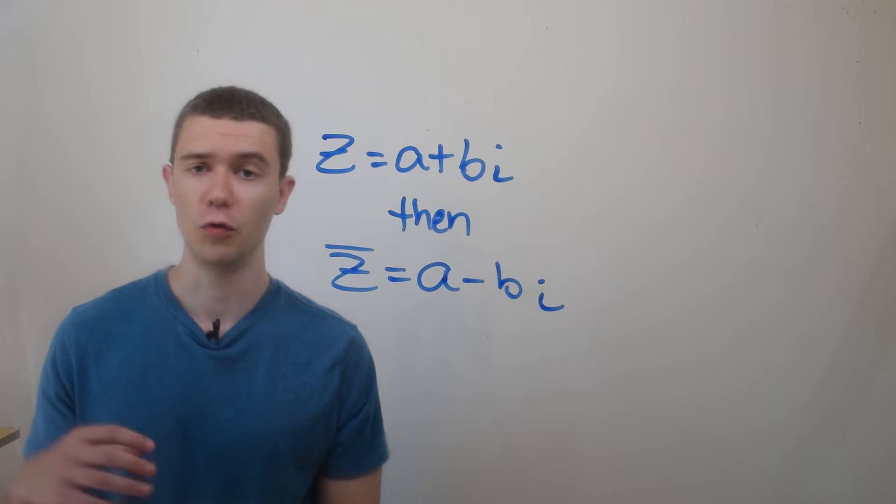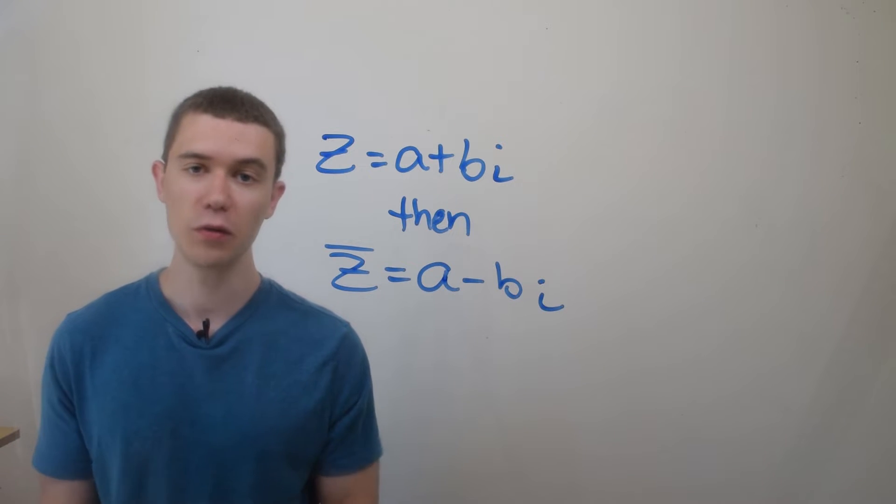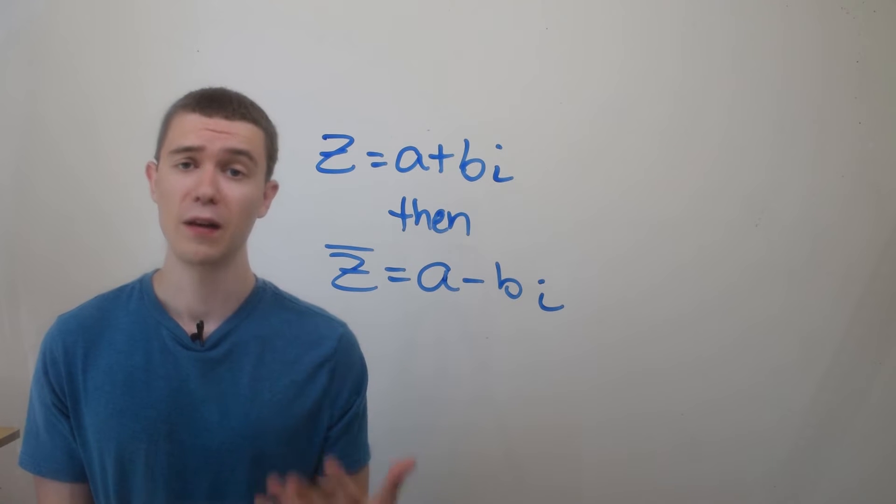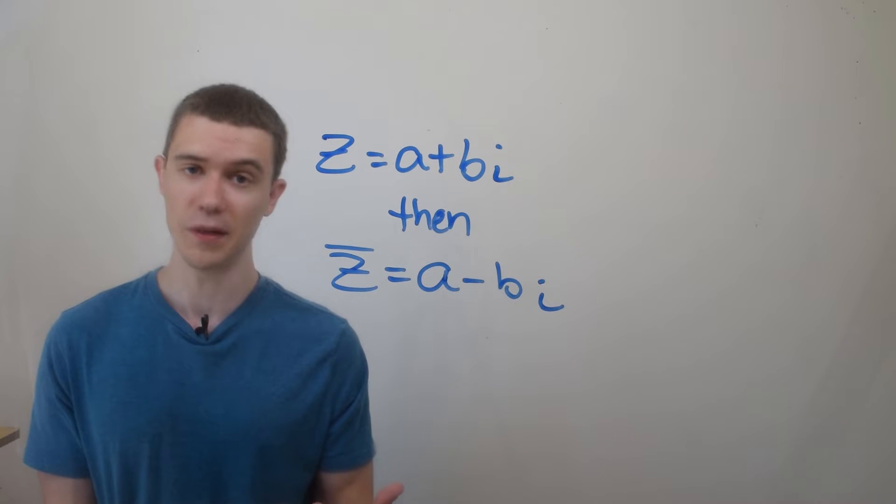So to do complex division, we need to introduce the idea of the complex conjugate. It's denoted with this little bar over top of the complex number. And all it means, it's a pretty simple idea, that if your complex number is a plus bi, the conjugate is just a minus bi. We just flip the sign in between the real and the imaginary parts.